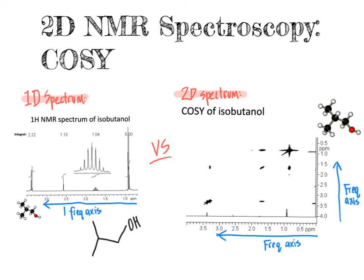There are a wide variety of different two-dimensional NMR experiments that can be conducted. We are going to look at three of the most common and widely applicable types of 2D experiments, starting with the correlation spectroscopy experiment in this video. Then we will look at the so-called HSQC experiment — heteronuclear single quantum coherence — and finally HMBC, heteronuclear multiple bond correlation, so that by the end of this series of videos, you will understand what information is provided within each of these types of 2D NMR spectra.